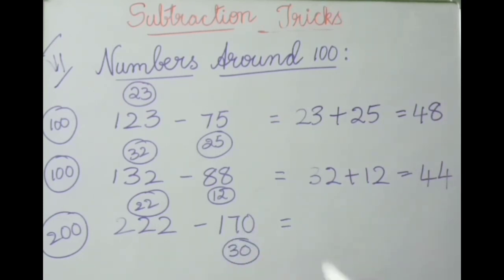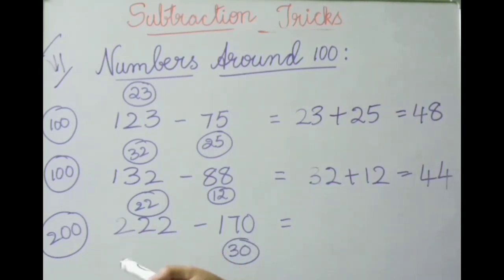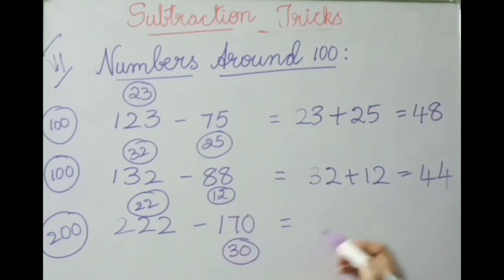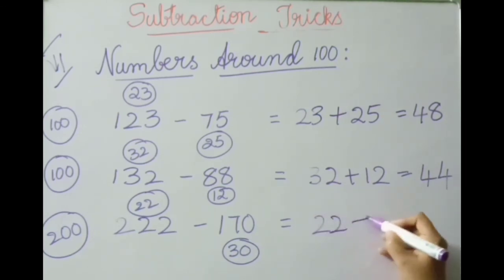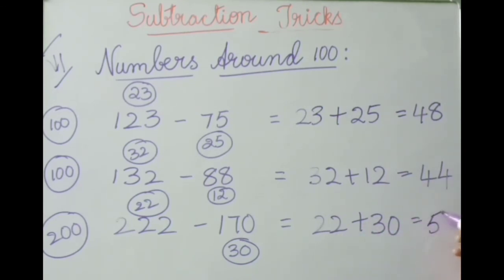See the last example: two hundred twenty-two minus one hundred seventy. Both numbers are nearer to two hundred. Two hundred twenty-two is twenty-two above two hundred. One hundred seventy is thirty below two hundred. Add these two: twenty-two plus thirty — twenty plus thirty is fifty, plus two is fifty-two. The answer is fifty-two.